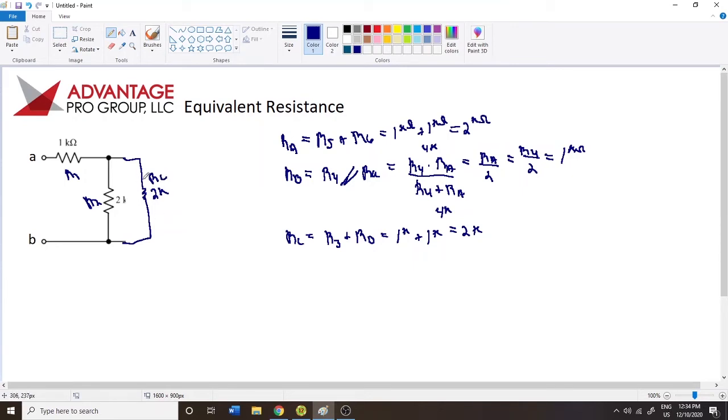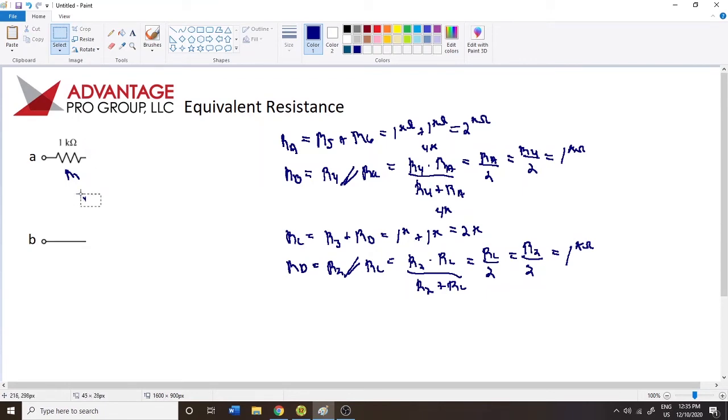And we're just working our way through. This problem just happens to work out this way, where we have things that are nice, where the numbers work out well. RD is going to be equal to R2 in parallel with RC, which is equal to R2 times RC divided by R2 plus RC, which is the same as RC over 2, or the same as R2, which is going to be equal to 1K ohm again. Let's delete that. And we have this last resistance here, and that's going to be RD, and this is equal to 1K ohm.